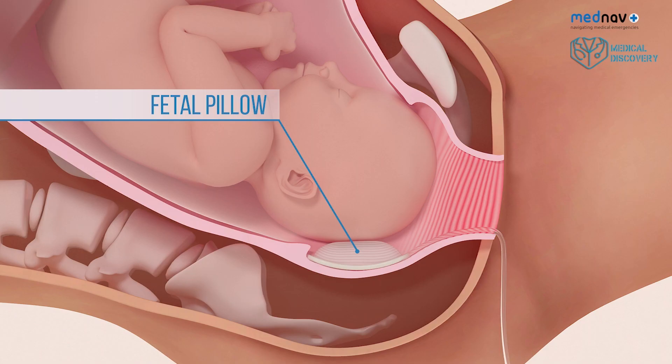Fetal pillow. This is a device which is inserted into the vagina before caesarean section. It will elevate the fetal head.